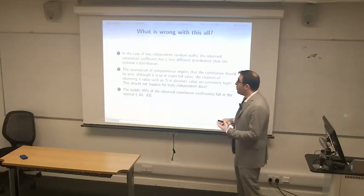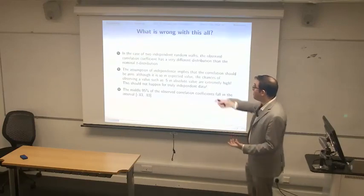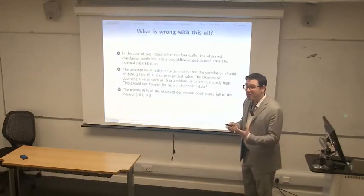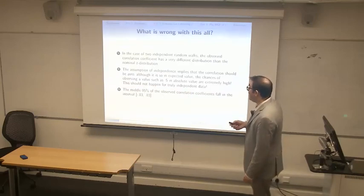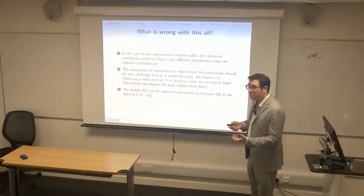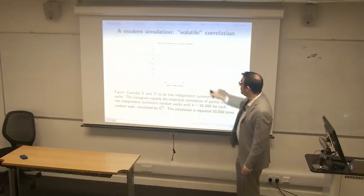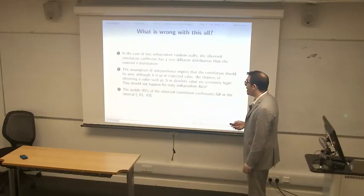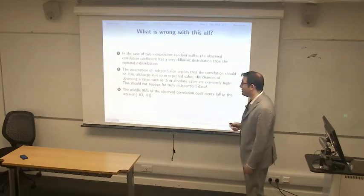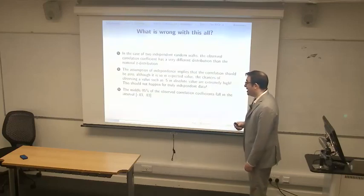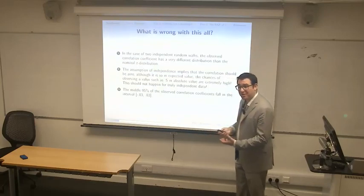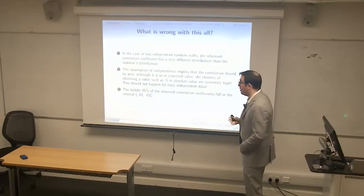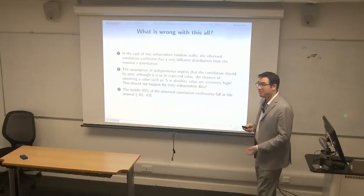There are two key problems. First, the chances of observing a correlation value of 0.5 in absolute value are extremely high, which should not happen for truly independent data. Second, the observed correlation coefficient has a very different distribution than the nominal T distribution — it appears roughly uniform from negative 0.5 to 0.5, and is definitely asymptotically not a normal distribution. The middle 95% of observed correlation coefficients fall between negative 0.83 and positive 0.83, which is concerning since we would hope the interval decays to zero asymptotically.